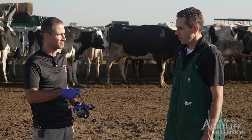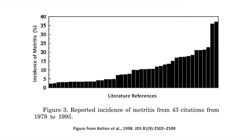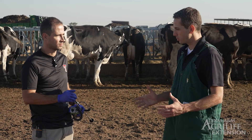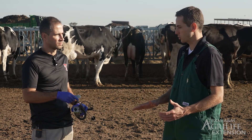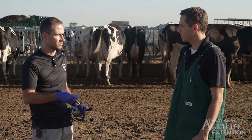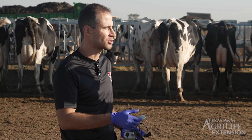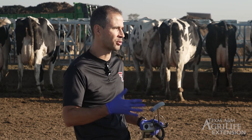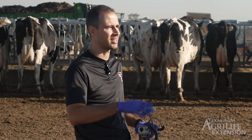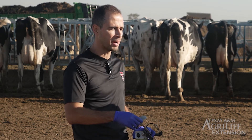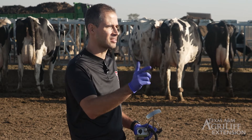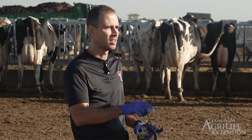Some of the variation we see in metritis rates between farms could be explained by certain herds having lower incidence than others. There is definitely potential benefit in controlling risk factors to keep metritis prevalence as low as possible and reduce the need to use antibiotics. A good transition period through proper nutrition, a stress-free environment, and a clean maternity pen are all very important strategies to reduce metritis.